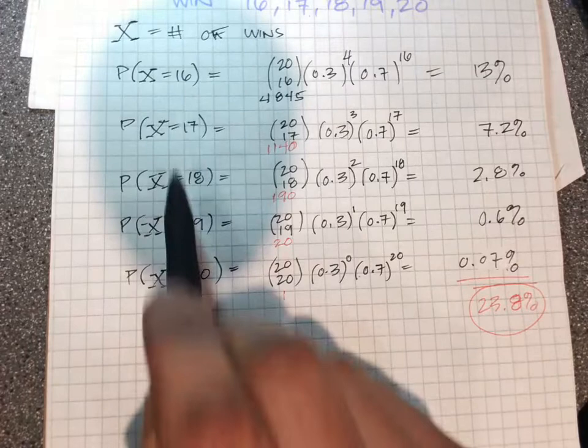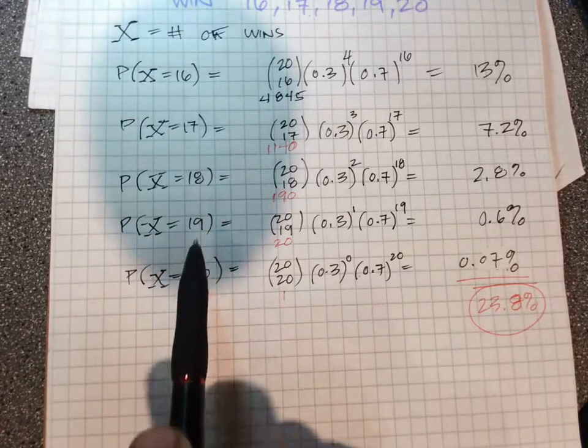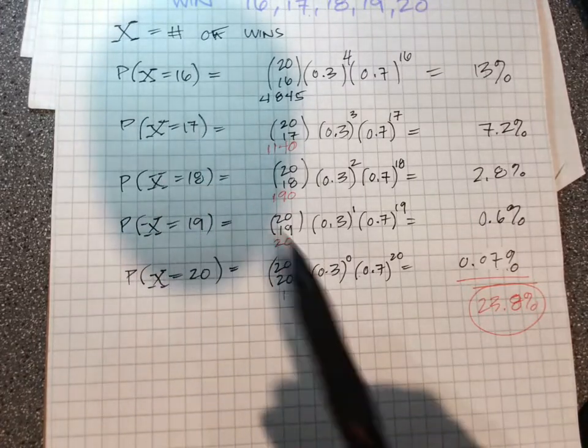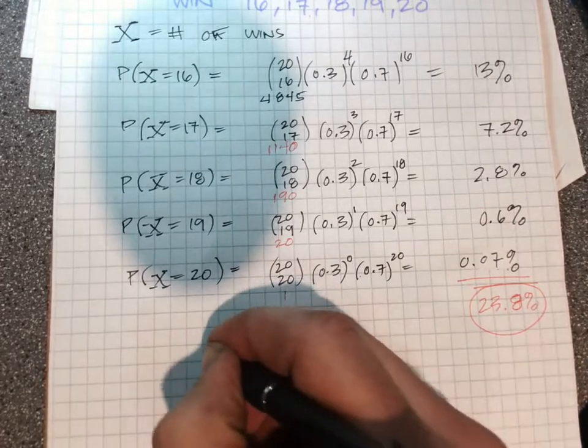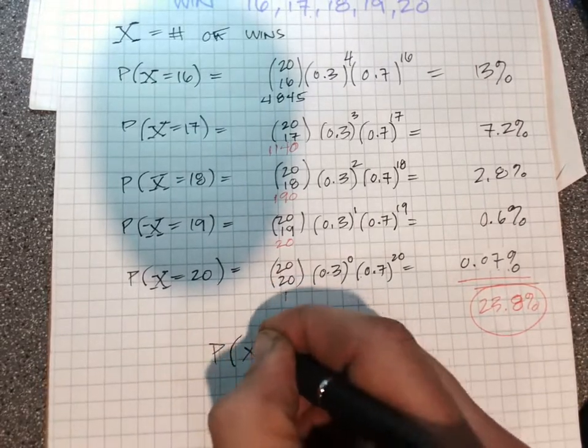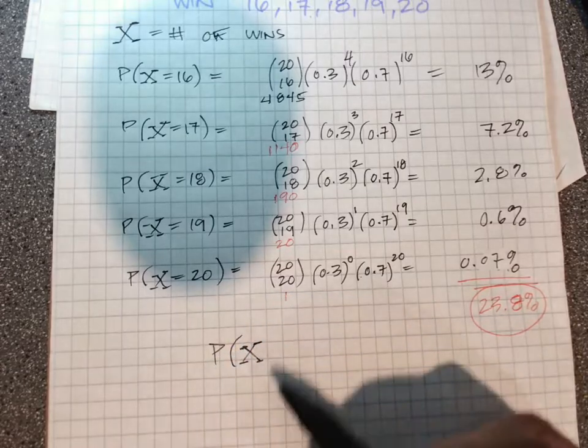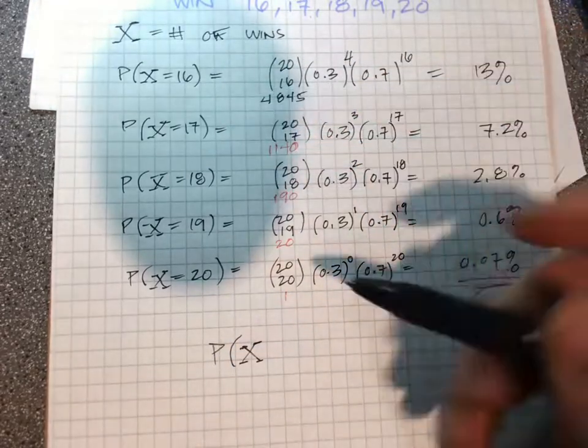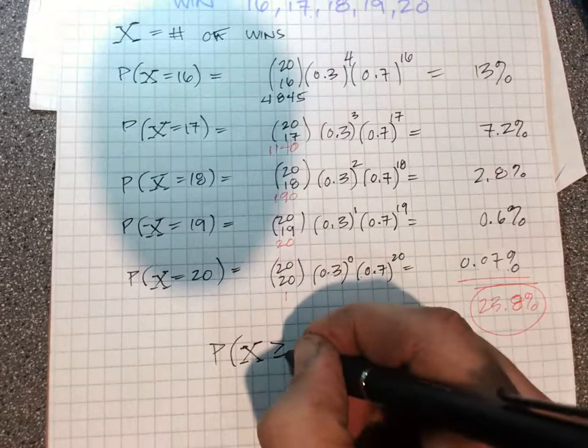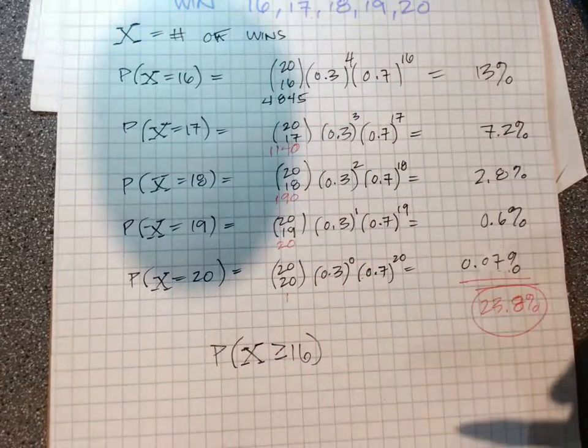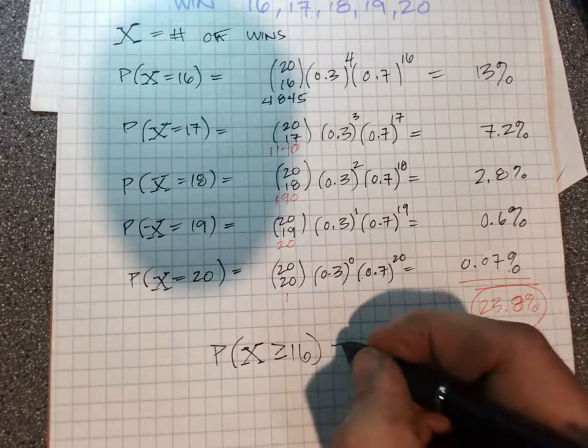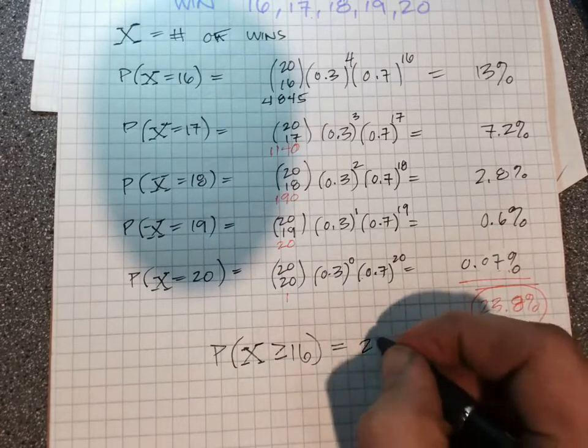Now you might want to write this. Notice here how X is 16, 17, 18, 19, or 20. That's a lot to write down, so we can shorthand that and say probability that the number of games is, looks like an easy way to write this would be greater than or equal to 16, because that would be those values, is 23.8%.